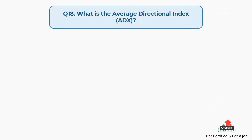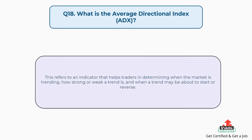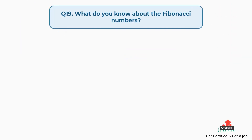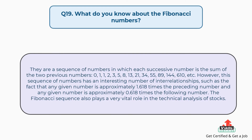Question number 18: What is the average directional index? This refers to an indicator that helps traders in determining when the market is trending, how strong or weak a trend is, and when a trend may be about to start or reverse.